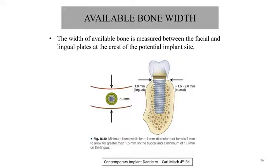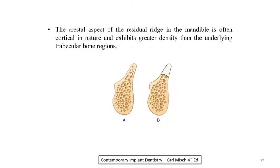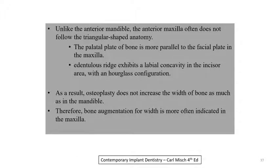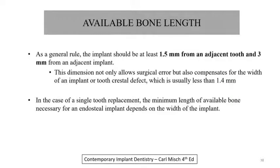For available bone width, it is measured between the facial and lingual plates at the crest of the potential implant site. The minimum bone width for a 4 mm diameter root form implant is 7 mm, to allow greater than 1.5 mm on the buccal and a minimum of 1 mm on the lingual. The crest of the residual ridge in the mandible is often cortical and exhibits greater density than the underlying trabecular bone. Unlike the anterior mandible, the anterior maxilla often does not follow a triangular-shaped anatomy; the palatal plate is more parallel to the facial plate, and the edentulous ridge exhibits a labial concavity in the incisor area like an hourglass conformation. For available bone length, the implant should be at least 1.5 mm from the adjacent tooth and 3 mm from the adjacent implant, allowing for surgical error and compensating for implant or tooth crestal defects.